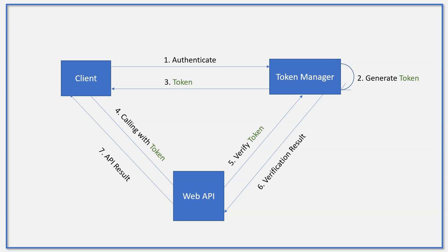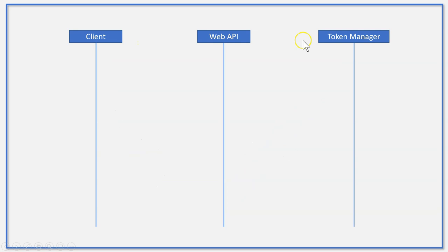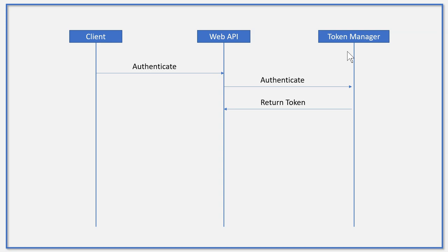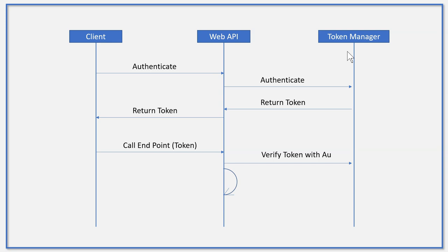This diagram simplifies the calling sequence. In fact, authentication also goes through WebAPI. Looking at the actual sequence diagram: the client, WebAPI, and token manager are all involved. The client authenticates through the WebAPI against the token manager. The token manager generates and returns a token if authentication is successful, which is returned to the client. For subsequent calls, the client calls the endpoints with the token. The WebAPI verifies it, and if successful, does its own processing and returns the result.